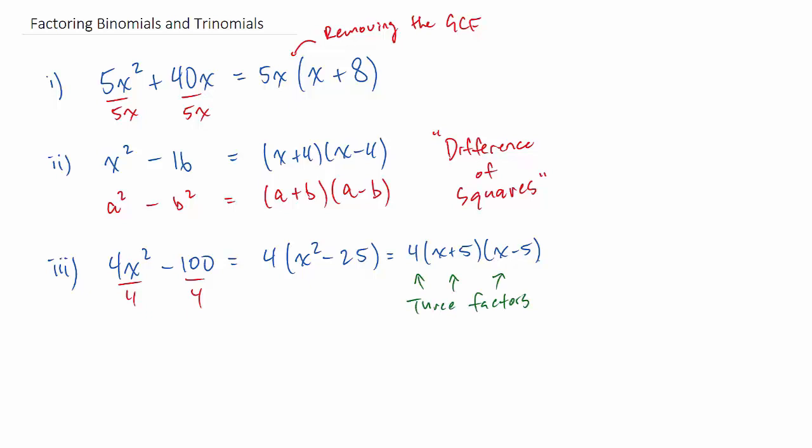In total, we have three factors. That's something they sometimes ask you: how many factors does the fully factored version of your binomial have? Next up, we're going to look at trinomials, the first case where a is one.